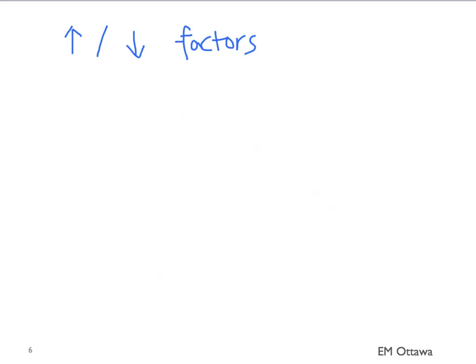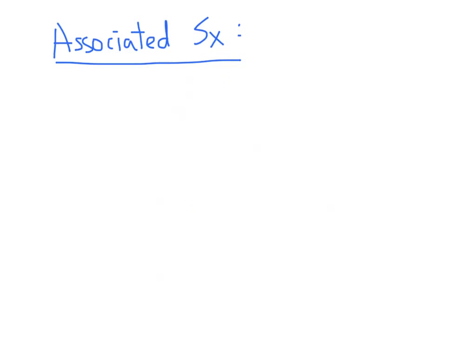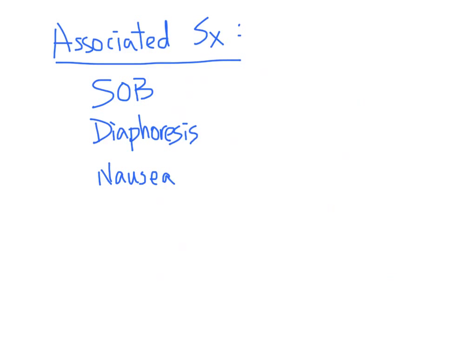We also want to know what makes the pain better or worse. Is the pain pleuritic — that is, is it worse when the patient takes in a big breath? Is the pain positional? Is the pain different if the patient is lying down versus sitting up? Is the pain worse or better with exercise? Is the pain better or worse with rest? We also want to ask about associated symptoms, including shortness of breath, diaphoresis, nausea, and presyncope.